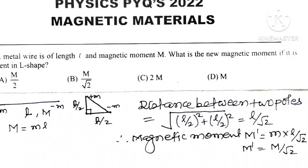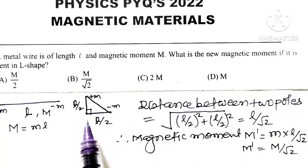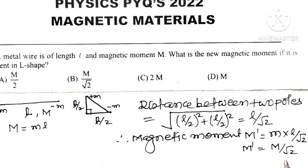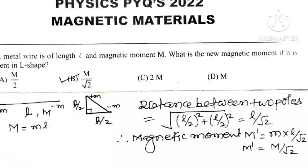So remember, when a wire of length L is bent into L shape at its center, the new magnetic moment is M divided by root 2 — that is, 1 by root 2 times the original magnetic moment. Out of 4 options, option B is the correct answer.